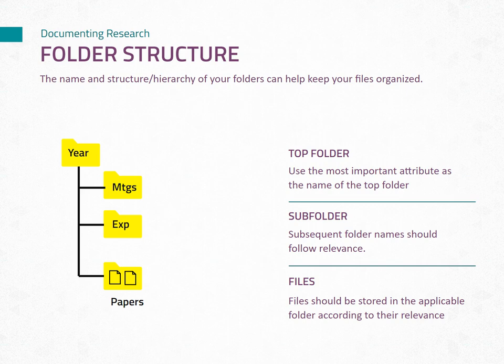Underneath the top-level folder, you should create subfolders to further categorize your files. For example, you may have a folder for meeting minutes and updates to store all relevant documents. Another folder can be dedicated to experiments, with separate folders for different types of experiments, such as tensile, TGA, SEM, and more. Lastly, a folder for papers or publication drafts can be included to keep all your research outputs organized. The key principle behind the folder structure is to group files based on their relevance and relationships. By storing files in their corresponding folders, you create a logical system that allows for seamless navigation and retrieval of files when needed.